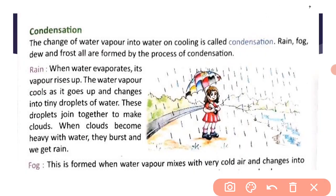Next we will discuss condensation. The change of water vapor into water on cooling is called condensation. Water vapor jab cool hone par water mein change ho jaata hai, that is called condensation. Rain, fog, dew, and frost — all are formed by the process of condensation.